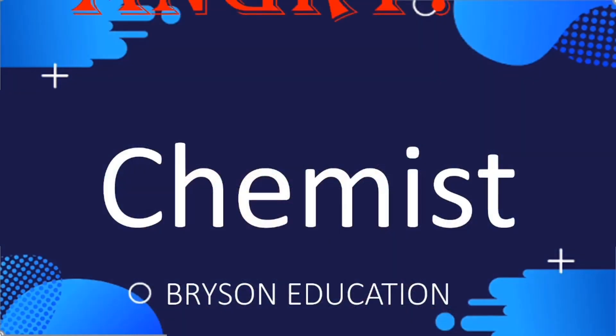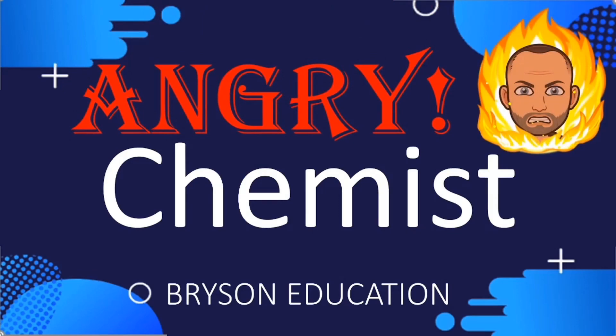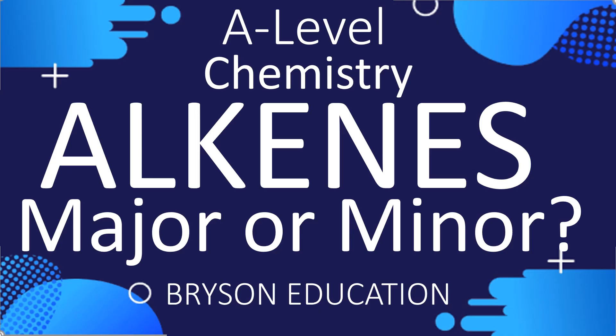Hey, I'm the Angry Chemist. This video is going to look at the major and minor products when we do the electrophilic addition reactions of alkenes, because when you add things to an alkene there are often two possible products.